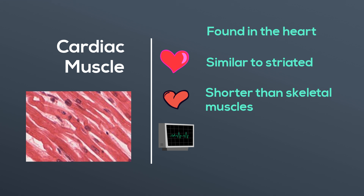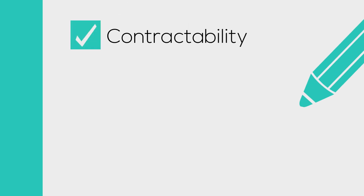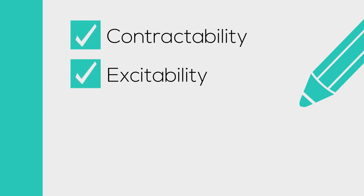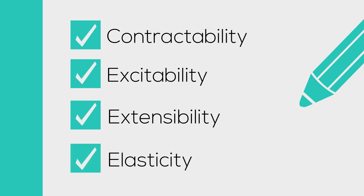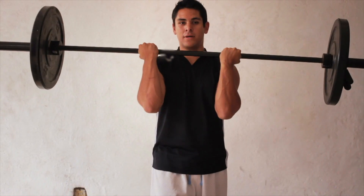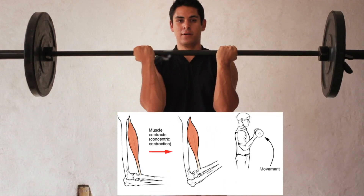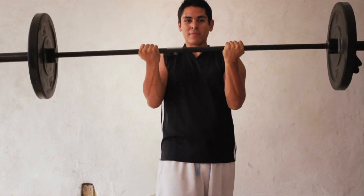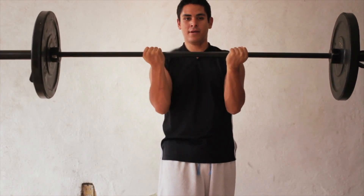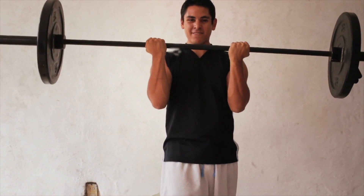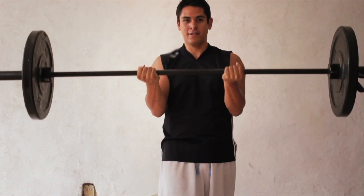All muscles have four common characteristics: contractibility, excitability, extensibility, and elasticity. Contractibility is when a muscle shortens or contracts. Typically, as your muscle contracts, one of the bones will move and one will stay stationary.